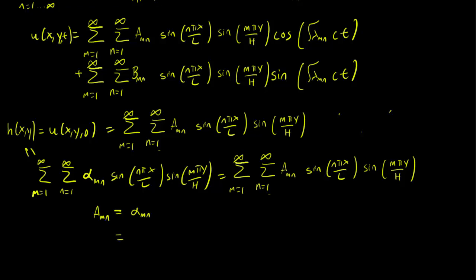But we know what alpha_mn is from the Fourier double series video we did just now. We got 4 over hl, integral from 0 to l, integral from 0 to h, h(x,y) sin(mπy/h) dy times sin(nπx/l) dx.